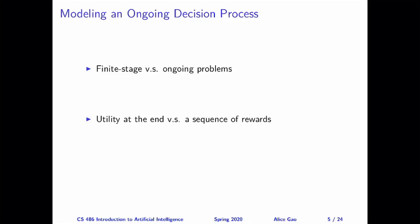In the previous few lectures, I focused on talking about decision problems with a finite number of stages. To model this kind of decision problem, it's sufficient to have a finite number of decision nodes and incorporate them into a decision network. However, in general, we may have to solve ongoing problems.